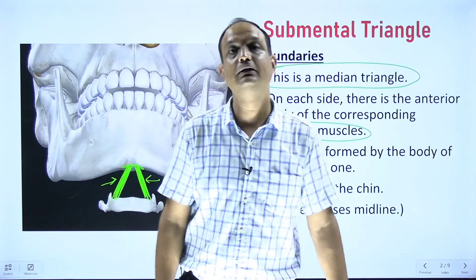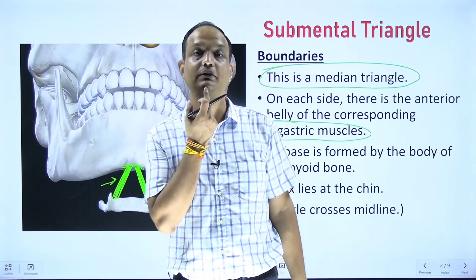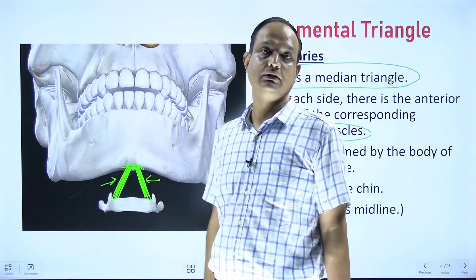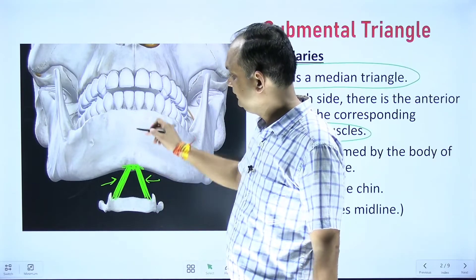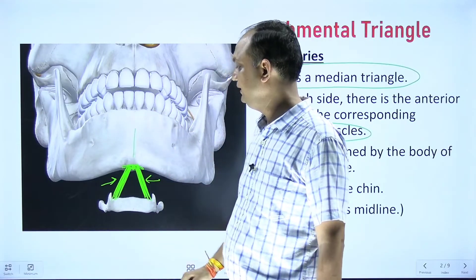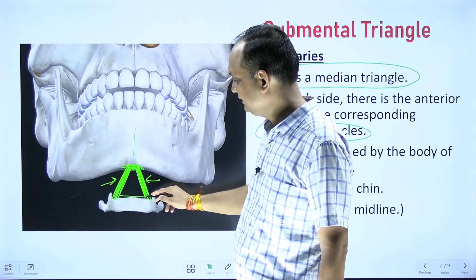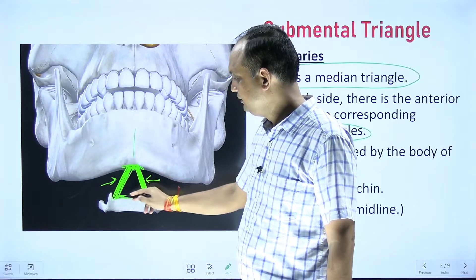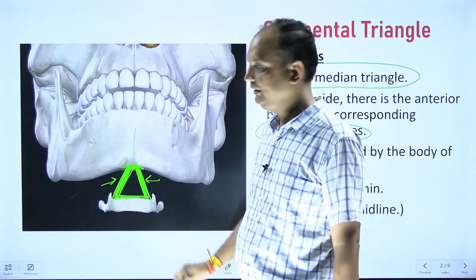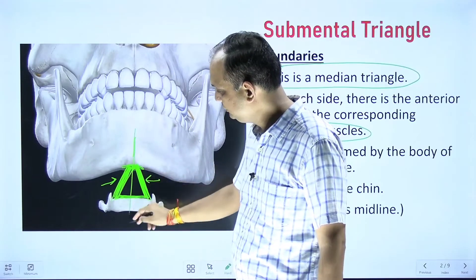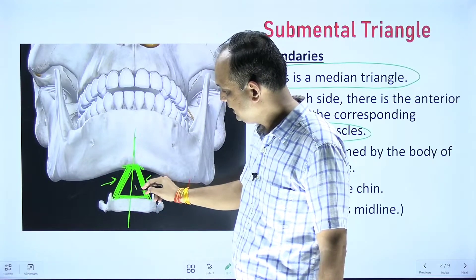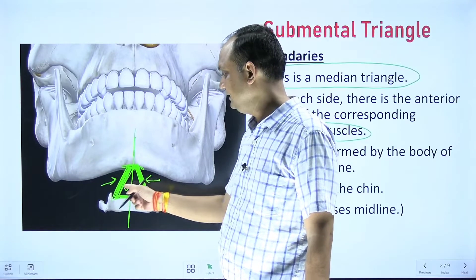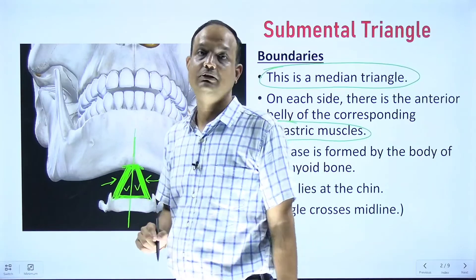The base is formed by the body of the hyoid bone, and the apex is towards the lower part of the symphysis menti, which is known as the chin. So the apex faces the lower end of the symphysis menti, and the base is formed by the hyoid bone. This triangle is divided into two halves — right and left — confirming that it crosses the midline.